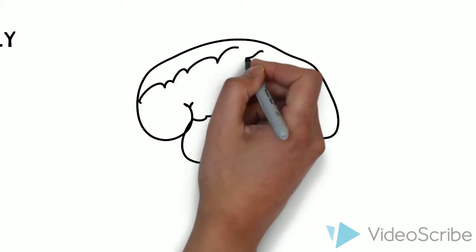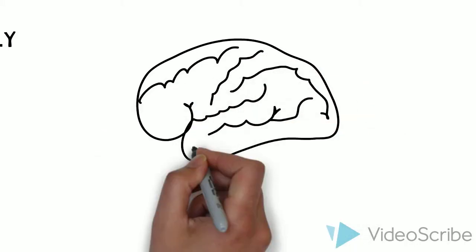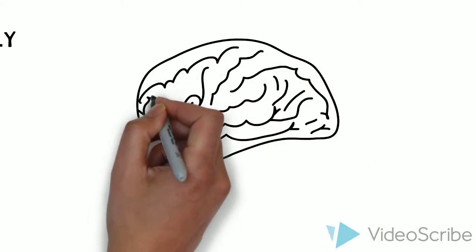The human brain is incredible. It weighs about three pounds, but it contains over 80 billion neurons that control our learning.